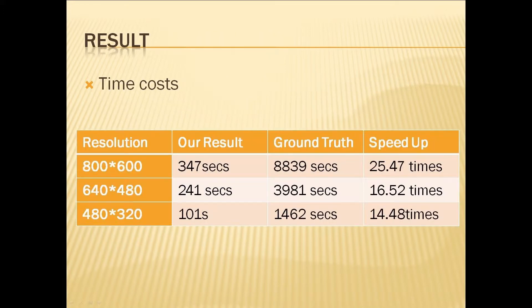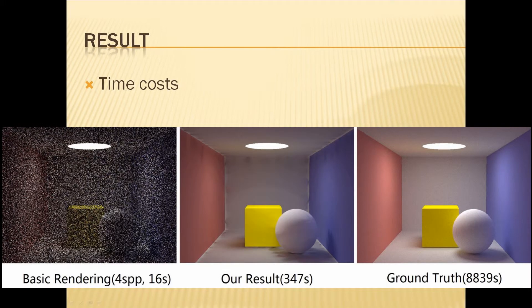Our results show about 20 times faster than the ground truth rendering. At a resolution of 600 by 800, it is about 25 times faster. At 640, it is about 16 times faster. As we can see, the higher the resolution, the more speedup we can achieve. So this is the basic result.